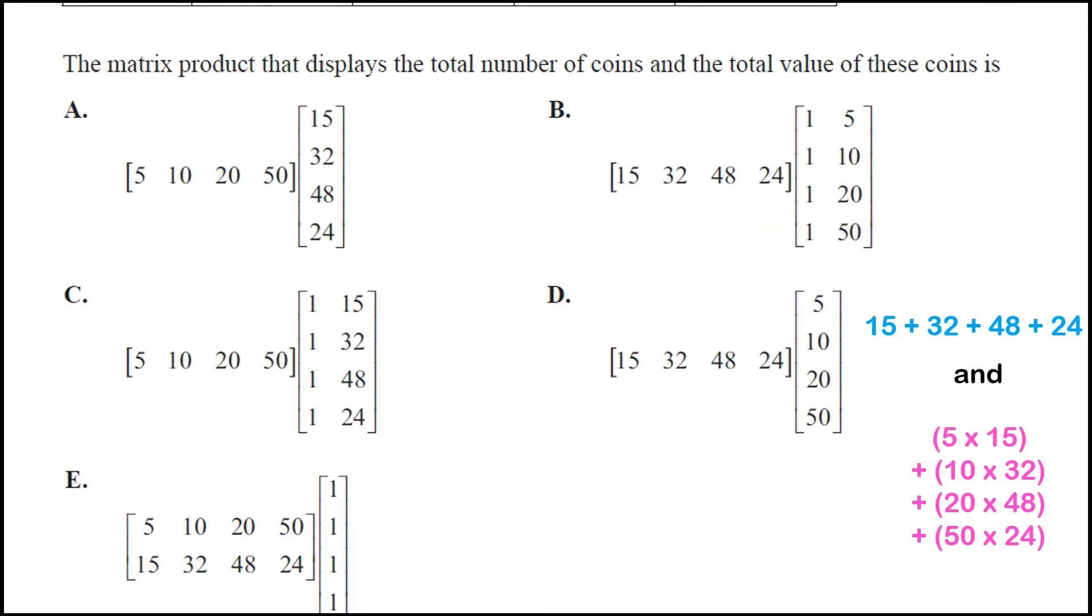Well if we look at option A, that matrix product is only going to give us a 1 by 1 matrix, so we can definitely rule that out. And the same goes for D. If we look at option B now, well look at that first row first column. That's going to give us 15 plus 32 plus 48 plus 24. So that's good.